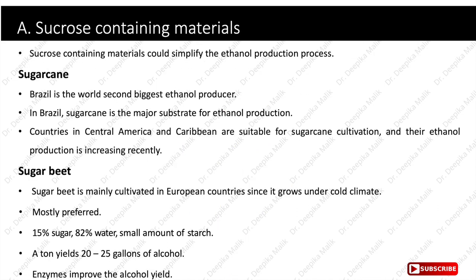The first category is sucrose-containing materials. Since sucrose is present in easily available form, it simplifies the ethanol production process. Substrates included here are sugarcane — Brazil, the world's second biggest ethanol producer, uses sugarcane as the major substrate. Countries in Central America and the Caribbean are also increasing ethanol production from sugarcane. Another substrate is sugar beets, mainly cultivated in European countries under cold climates, containing 15% sugar, 82% water and a small amount of starch. A ton of sugar beet yields 20 to 25 gallons of alcohol.